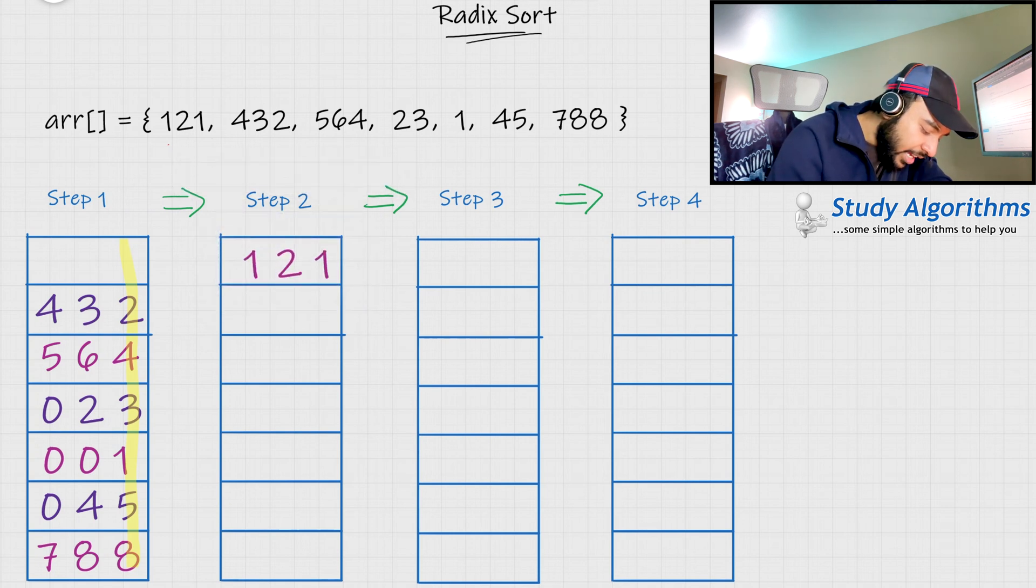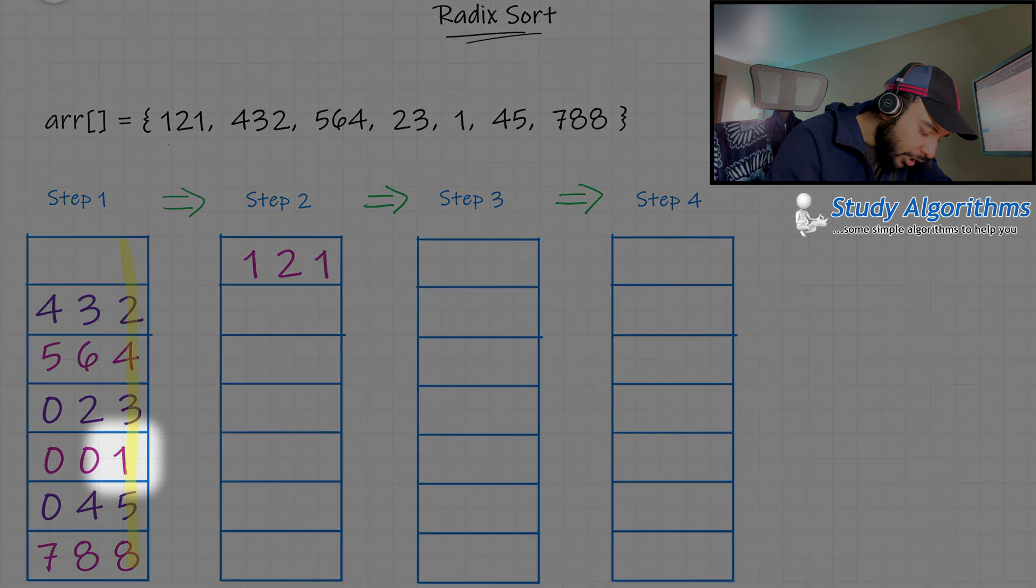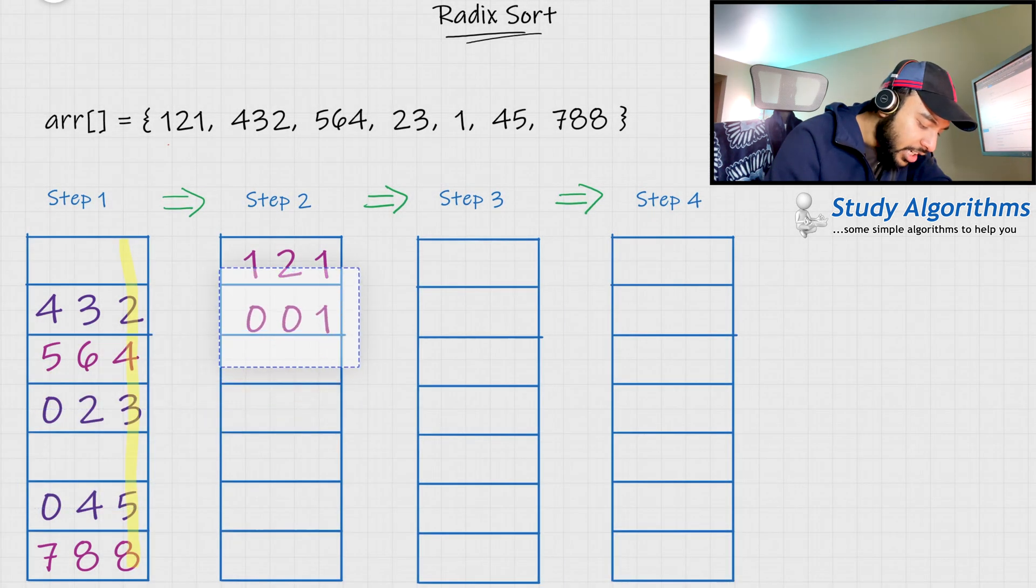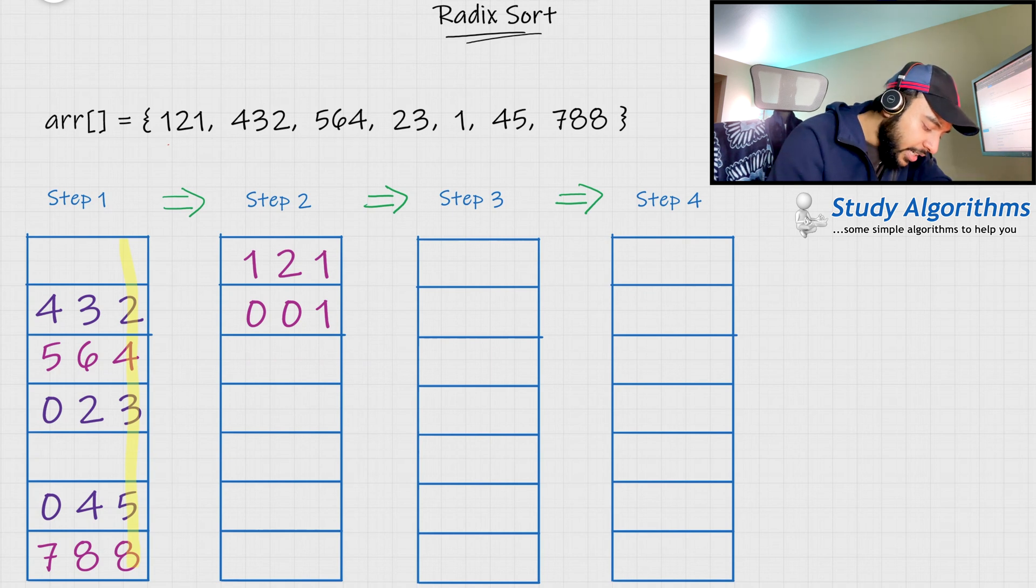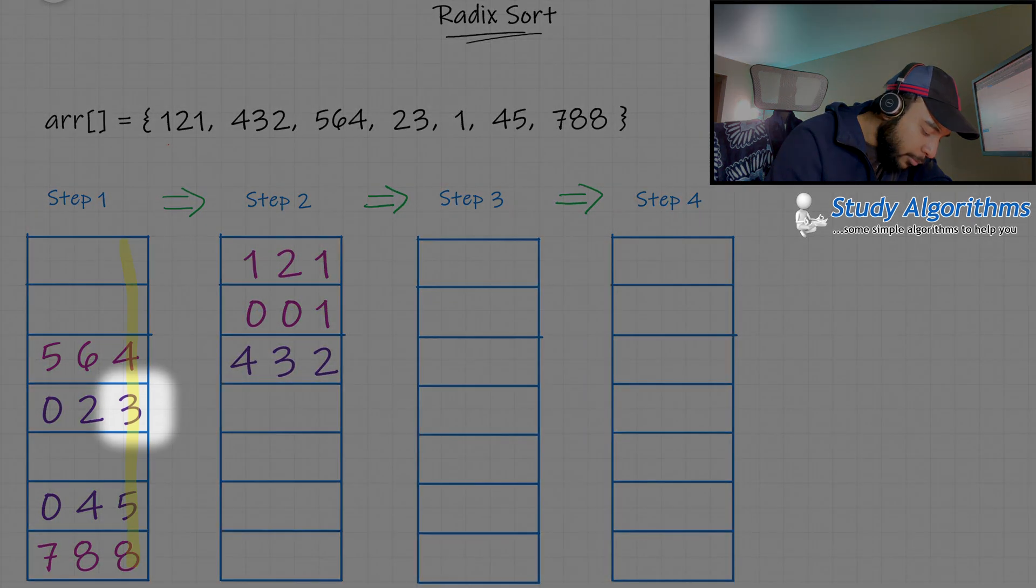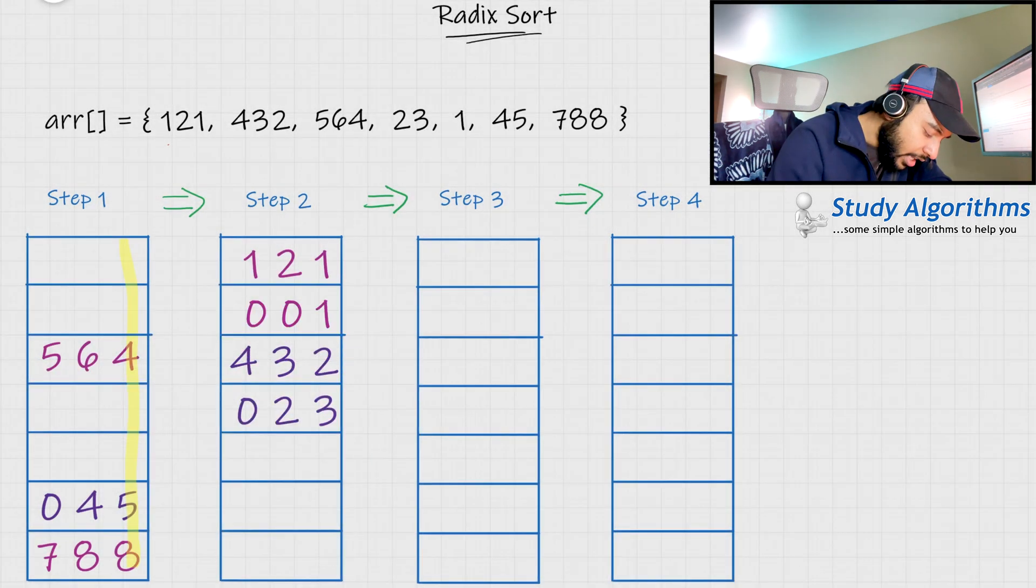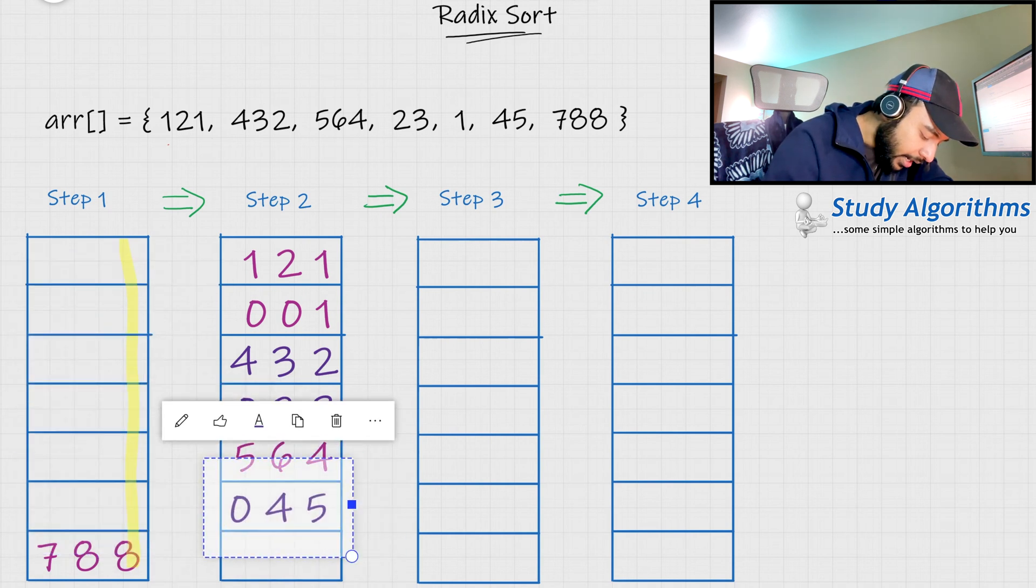Going forward, I scan the array once again. I see 1 over here. So, I move this element to position number 2. Next, I will again start from the top and see the number 2. I find 2 and I copy it over here. Then, I move number 3, then 4, then 5, and then finally 8.